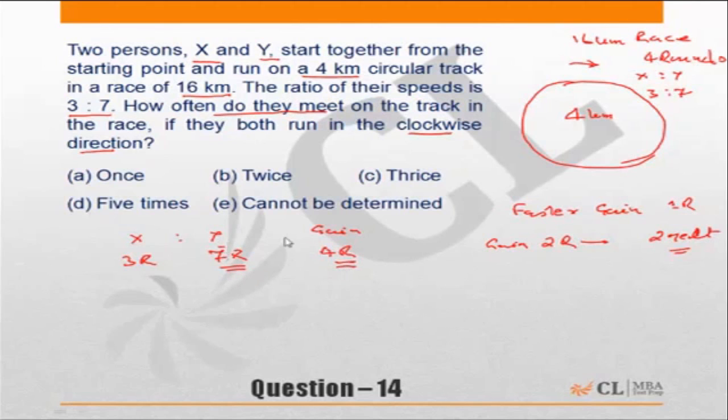Y need to do to complete the race? It's a 16-kilometer race, the track is 4 kilometers long, that means 4 rounds are required. So when Y does 4 rounds, how many rounds does he gain? He gains 4